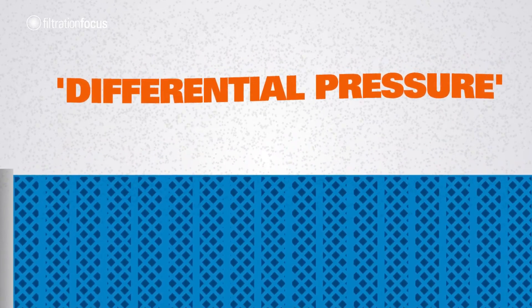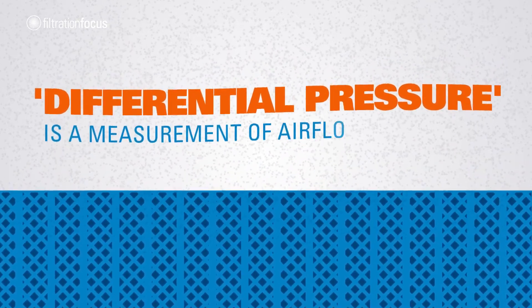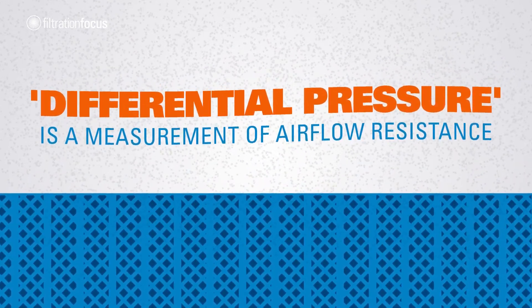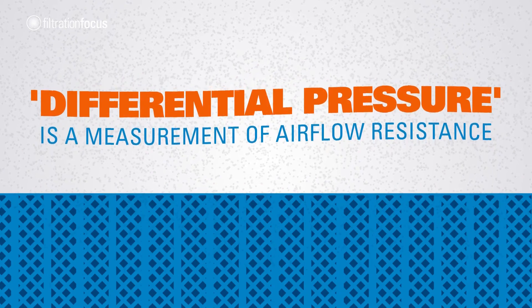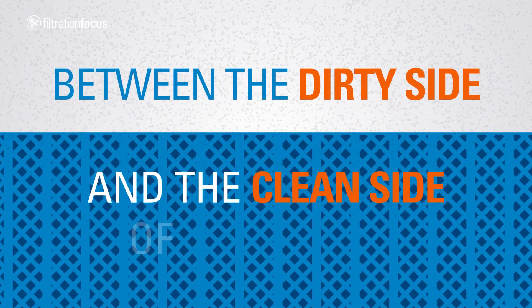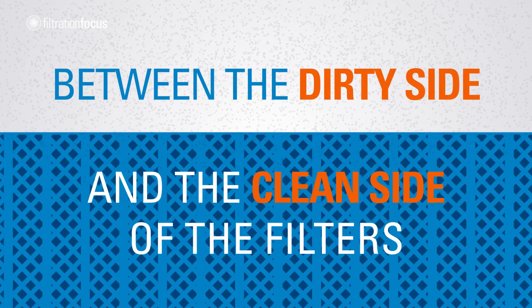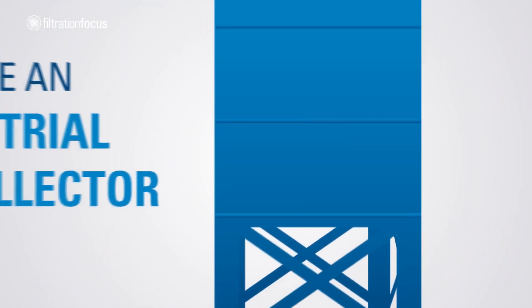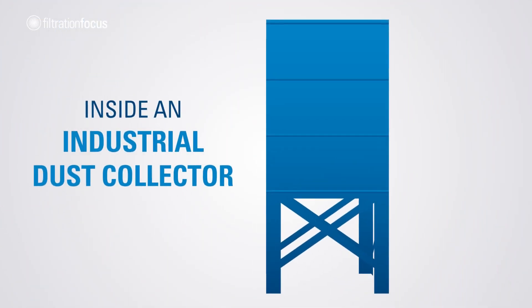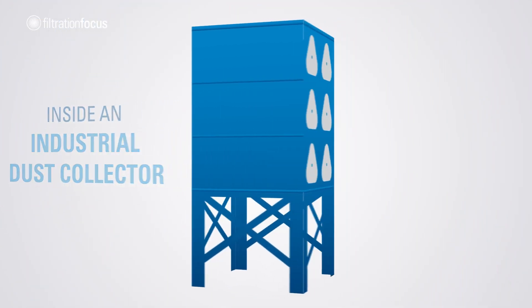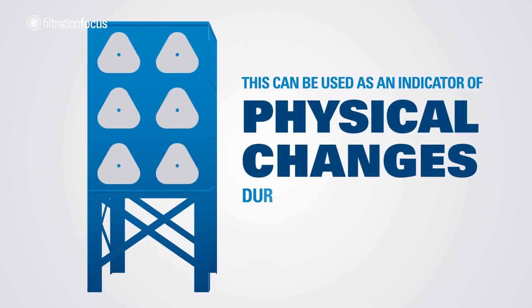Differential pressure is a measurement of airflow resistance between the dirty side and the clean side of the filters inside an industrial dust collector. This can be used as an indicator of physical changes during the life of the filters.